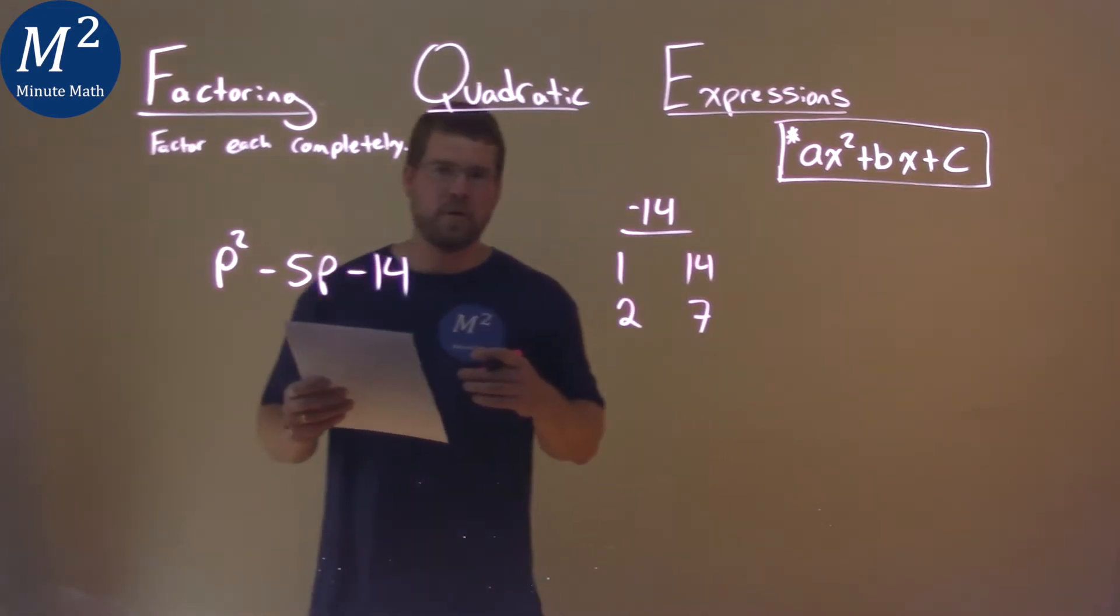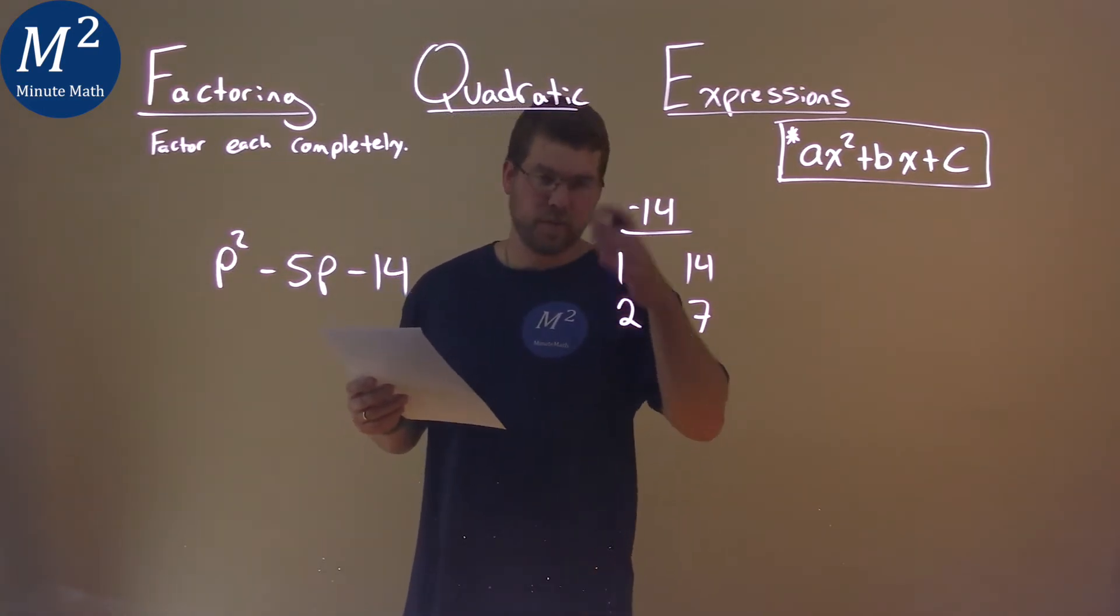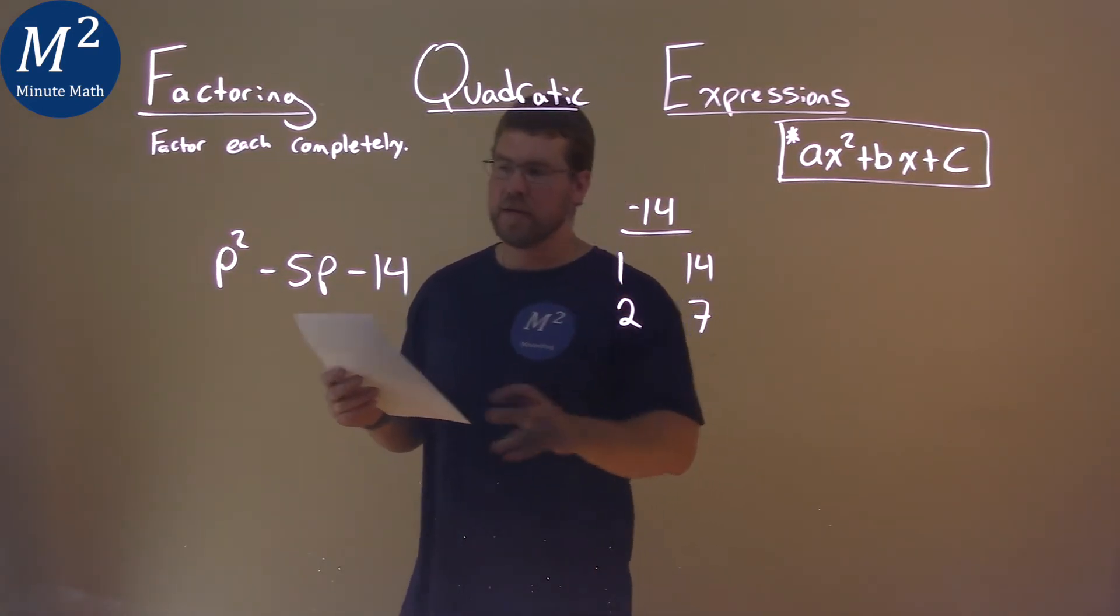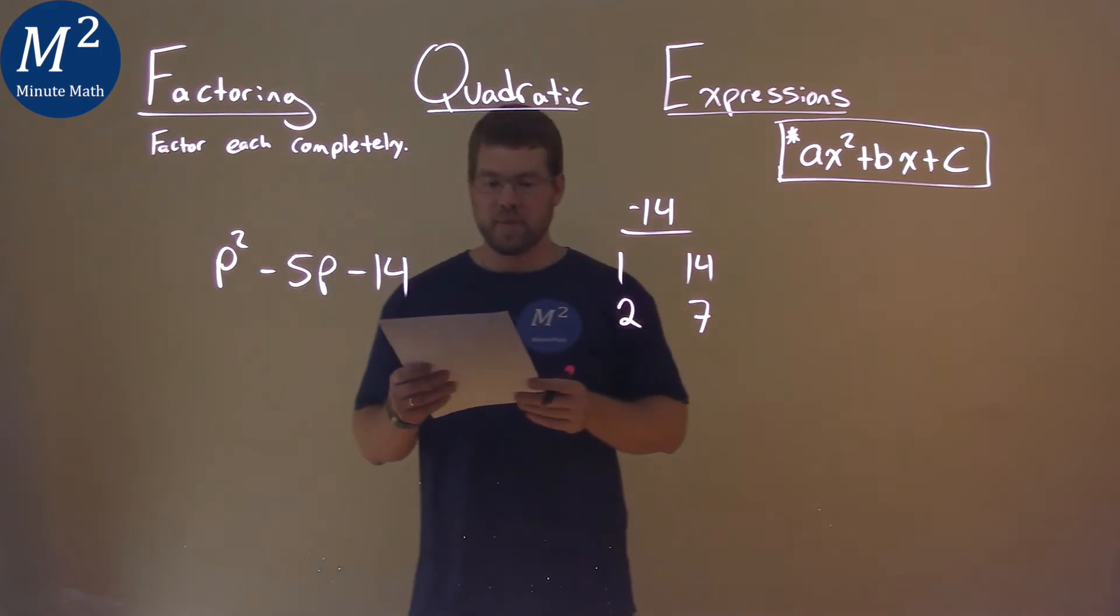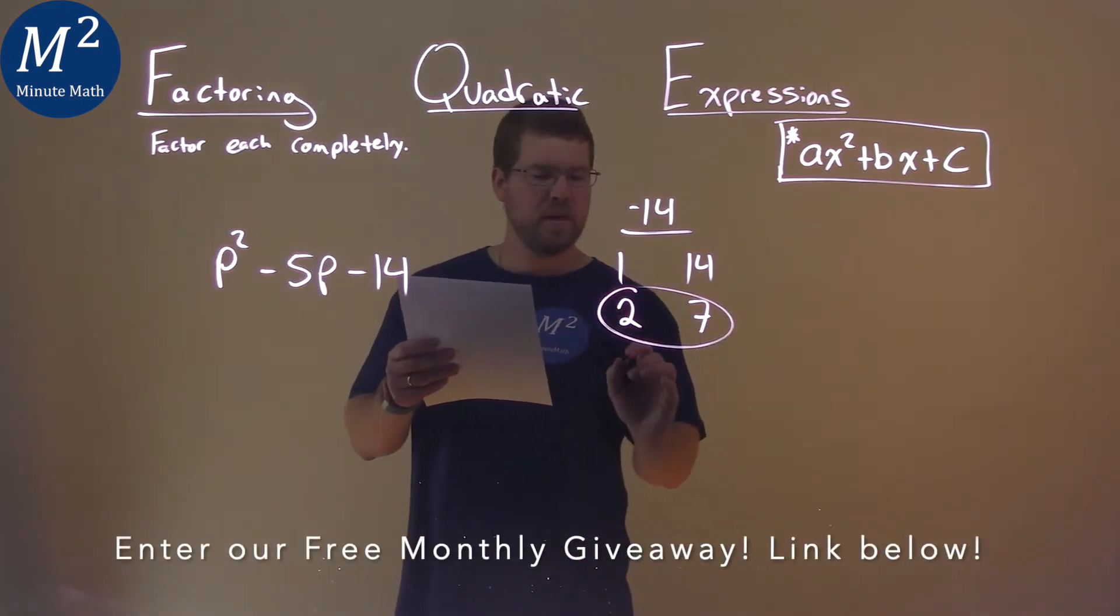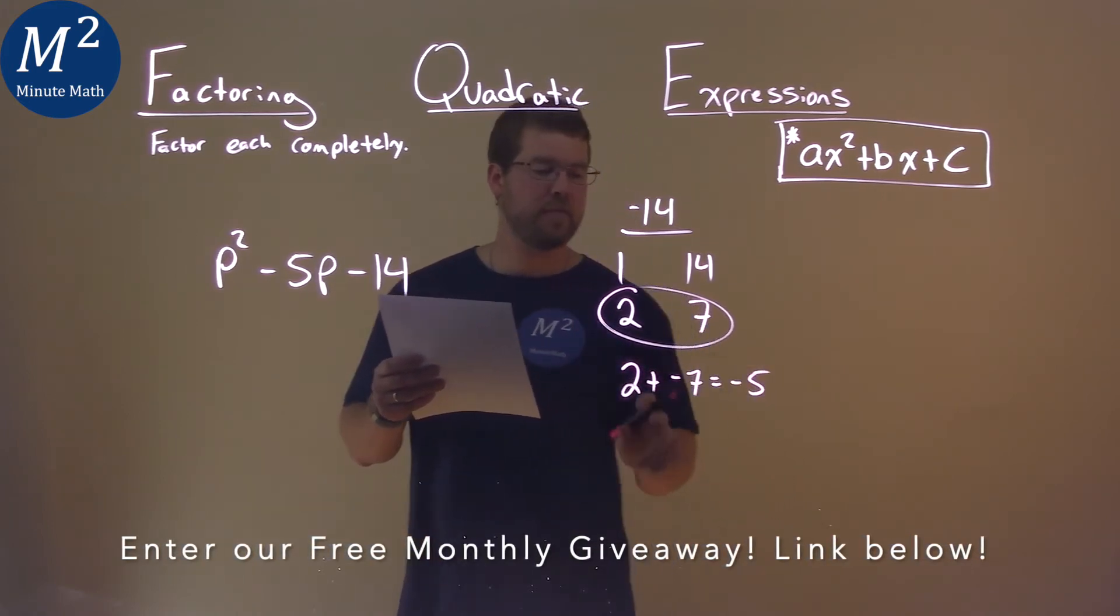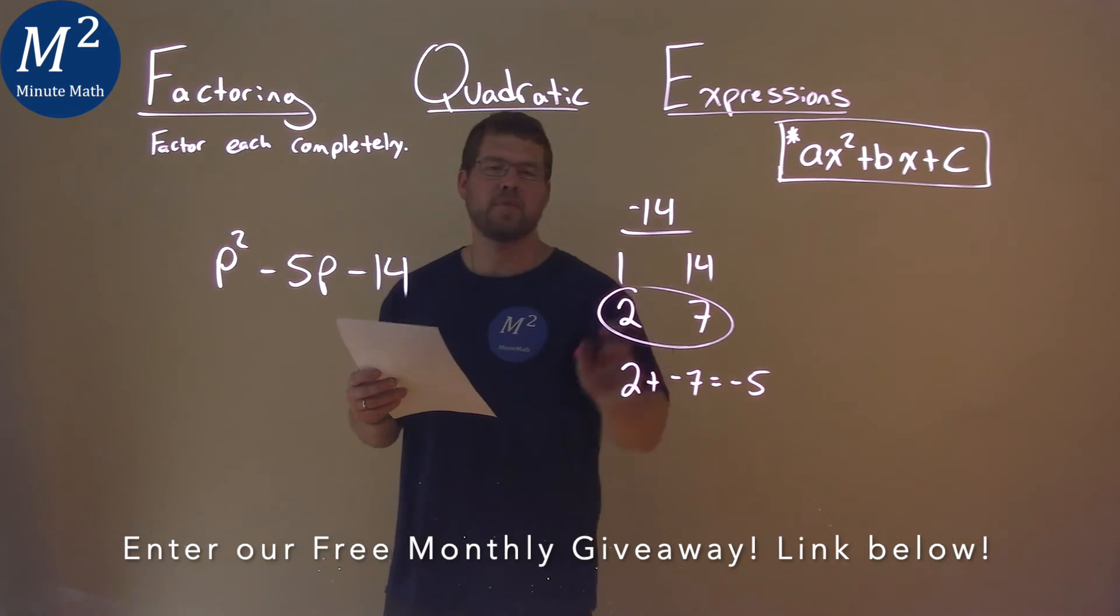Now I have to ask myself a second question. What two numbers add here, with some combination, one of them being negative, to be negative 5? And that is actually with 2 and 7. 2 plus negative 7 equals negative 5. And so those are the numbers that I'm looking for here.